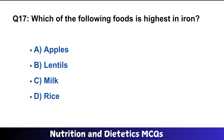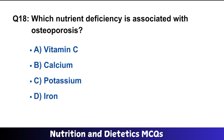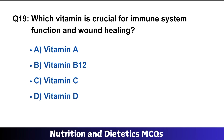Question number seventeen: which of the following foods is highest in iron? B is the right option: lentils. Question number eighteen: which nutrient deficiency is associated with osteoporosis? B is the right option: calcium.